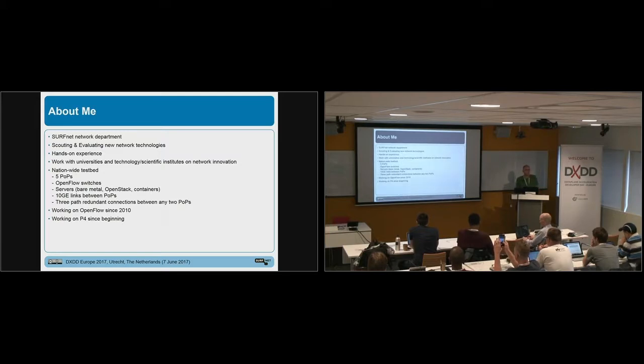A nationwide testbed with five POPs in the Netherlands, currently with OpenFlow switches and some servers on each POP interconnected with 10 gig links. And there are three path redundant links between any of the five POPs.